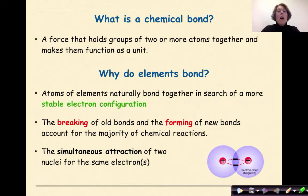A chemical bond is a force that holds groups of two or more atoms together and makes them function as a unit. Now the question is, why do elements bond? Atoms of elements naturally bond together in search of a more stable electron configuration.